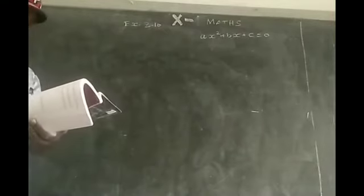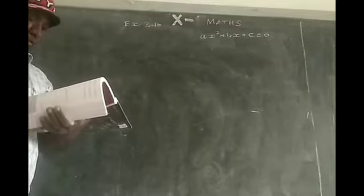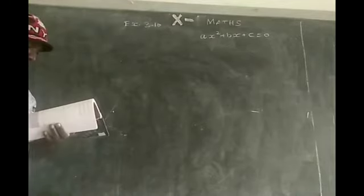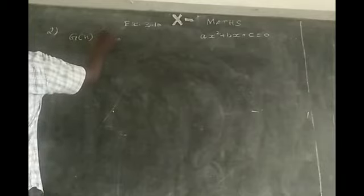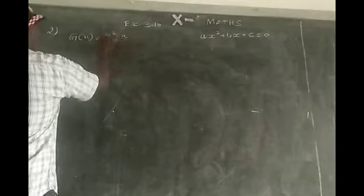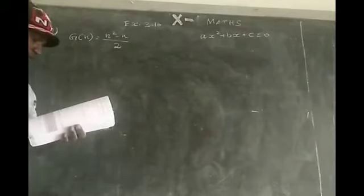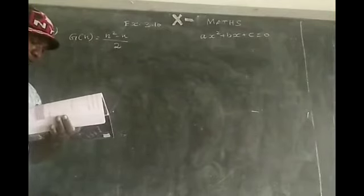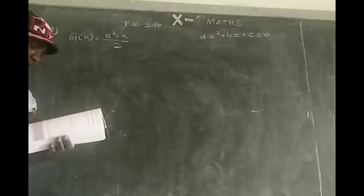The number of volleyball games that must be scheduled in a league with n teams is given by g(n) equal to n square minus n by 2. When each team plays with every other team exactly once, a league schedules 15 games. How many teams are there in the league?